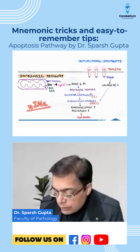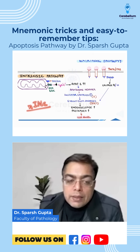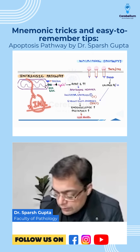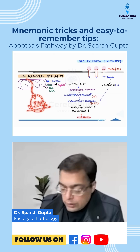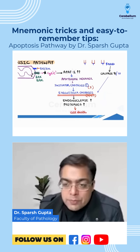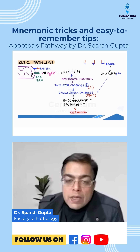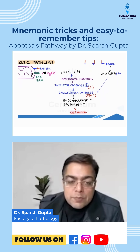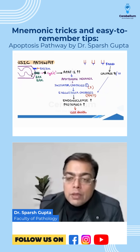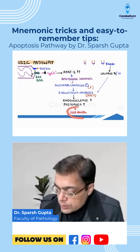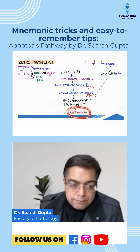This apoptosome is responsible for causing activation of an initiator caspase — caspase 9. Here is a simple trick: in the intrinsic pathway, caspase 9 is involved. When you write 9, think intrinsic. Caspase 9 then causes activation of the executioner caspases, which are caspase 3, 6, and 7. Caspases are enzymes that cause breakdown of nucleic acids as well as proteins, which is responsible for cell death.